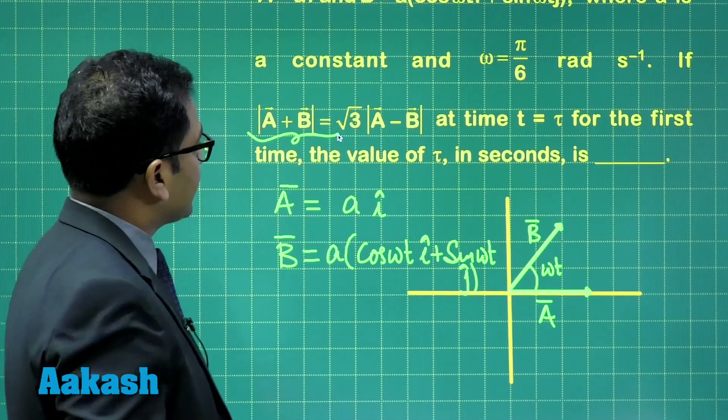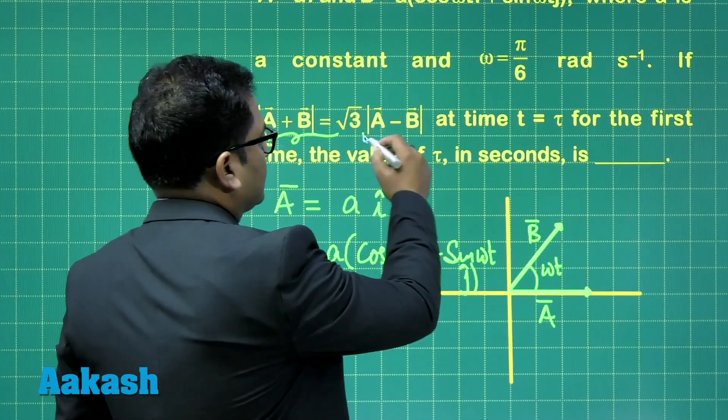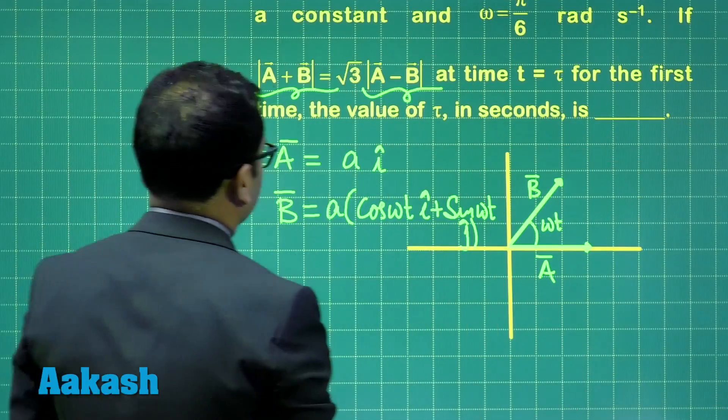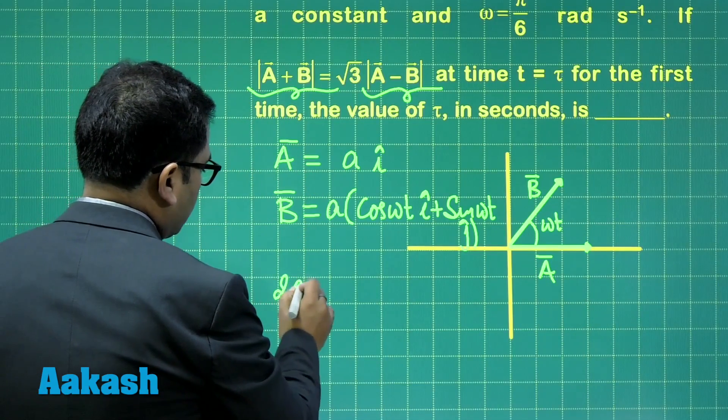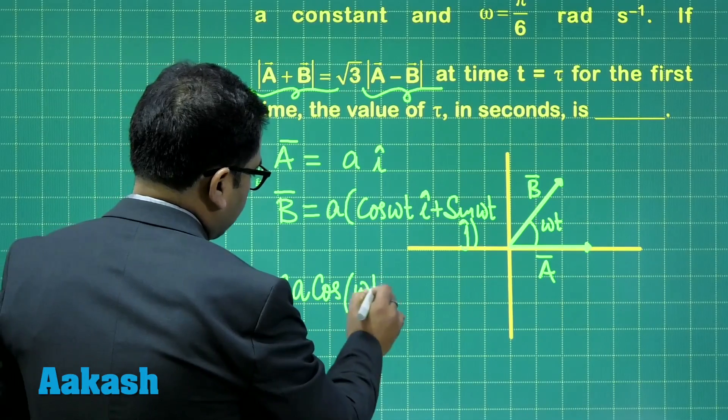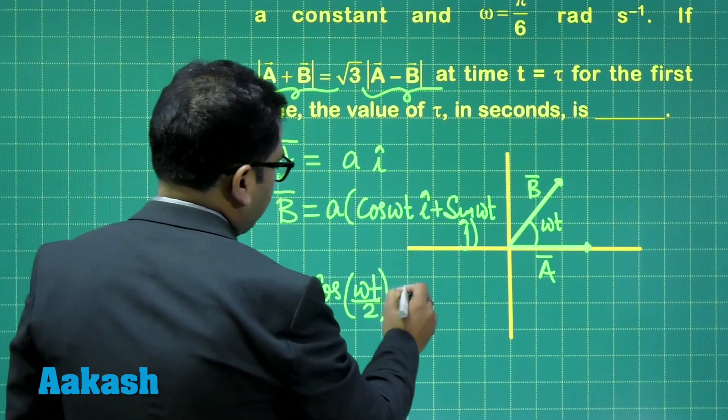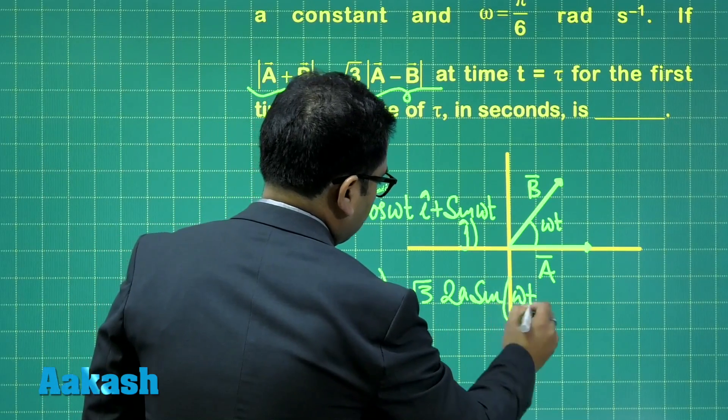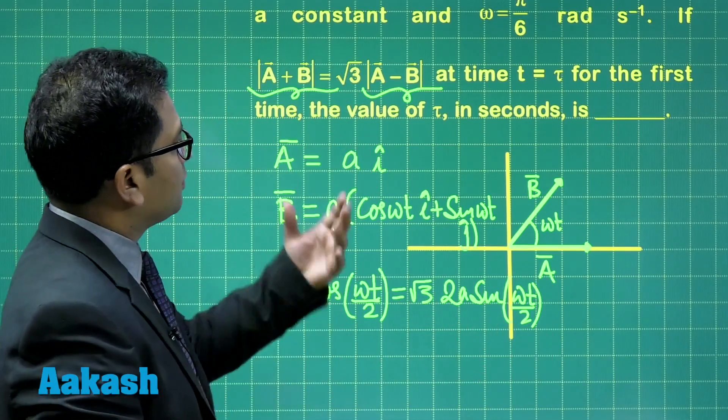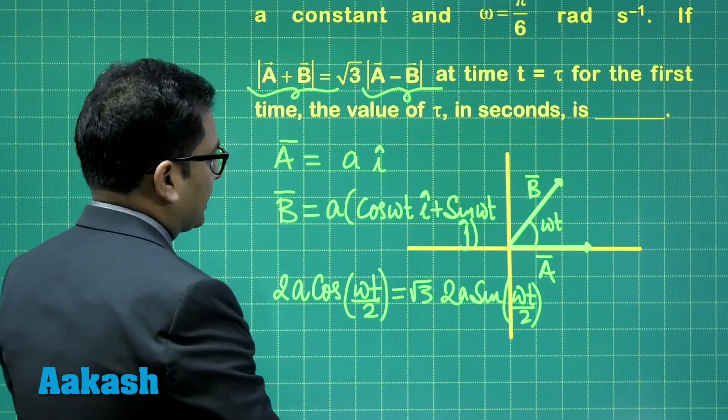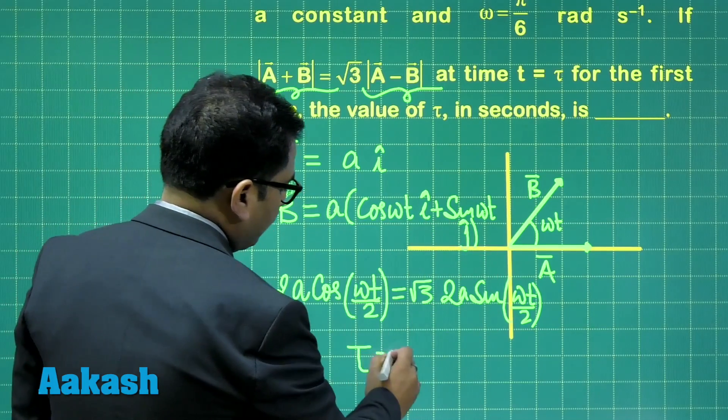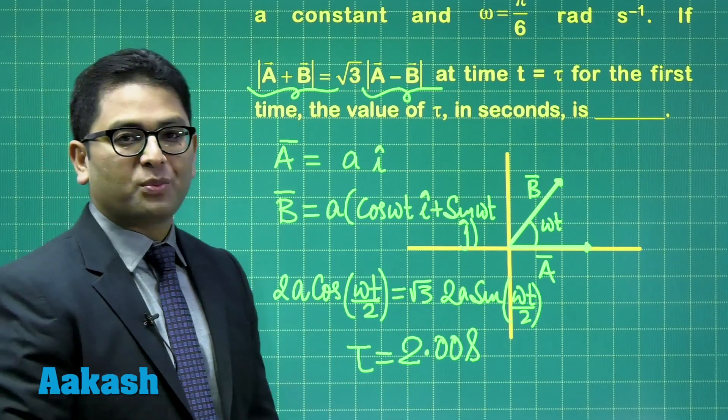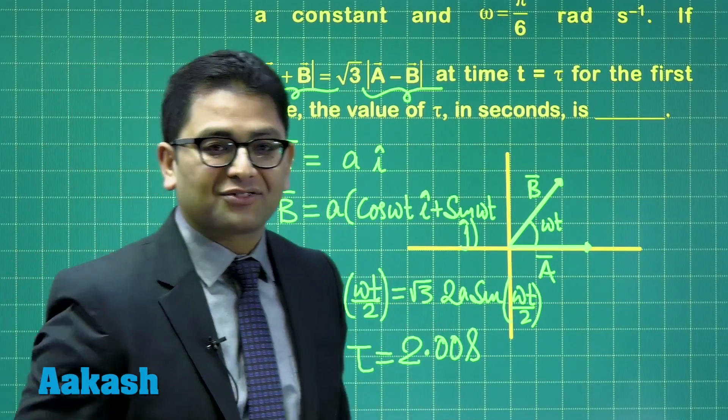This is addition of two vectors of same magnitude, and subtraction of two vectors of same magnitude. The first part gives 2A cos(ωt/2), and the second part gives √3 × 2A sin(ωt/2). With calculation, putting ω = π/6 rad s⁻¹, you get the value of time as 2 seconds. So that would be 2.00 seconds, complying with the requirement to report two digits after decimal.